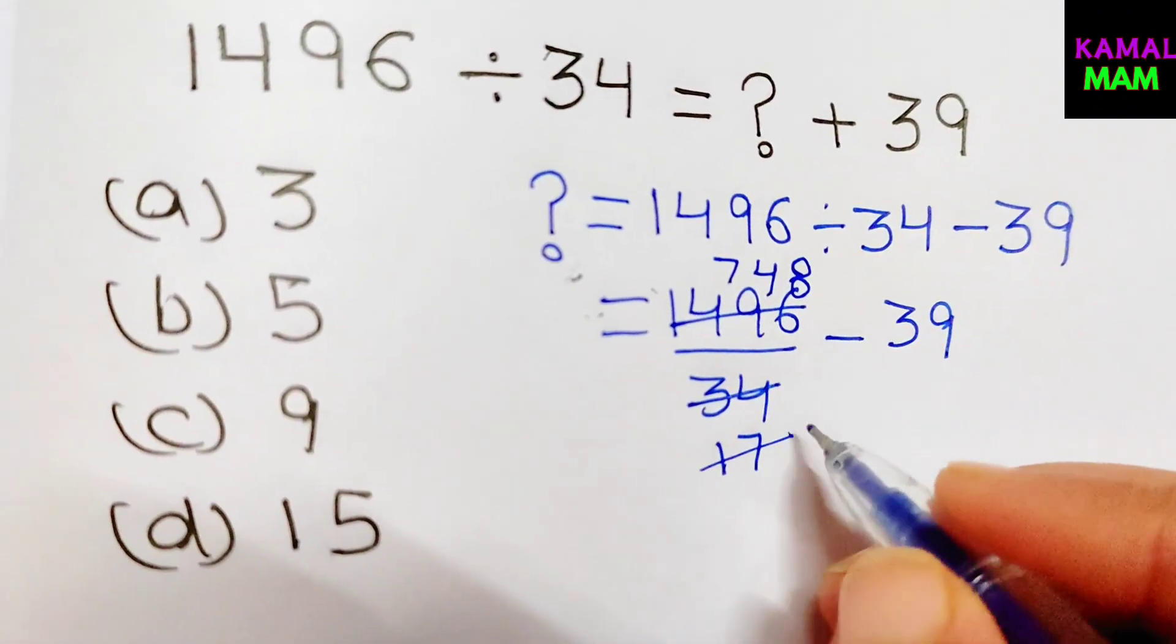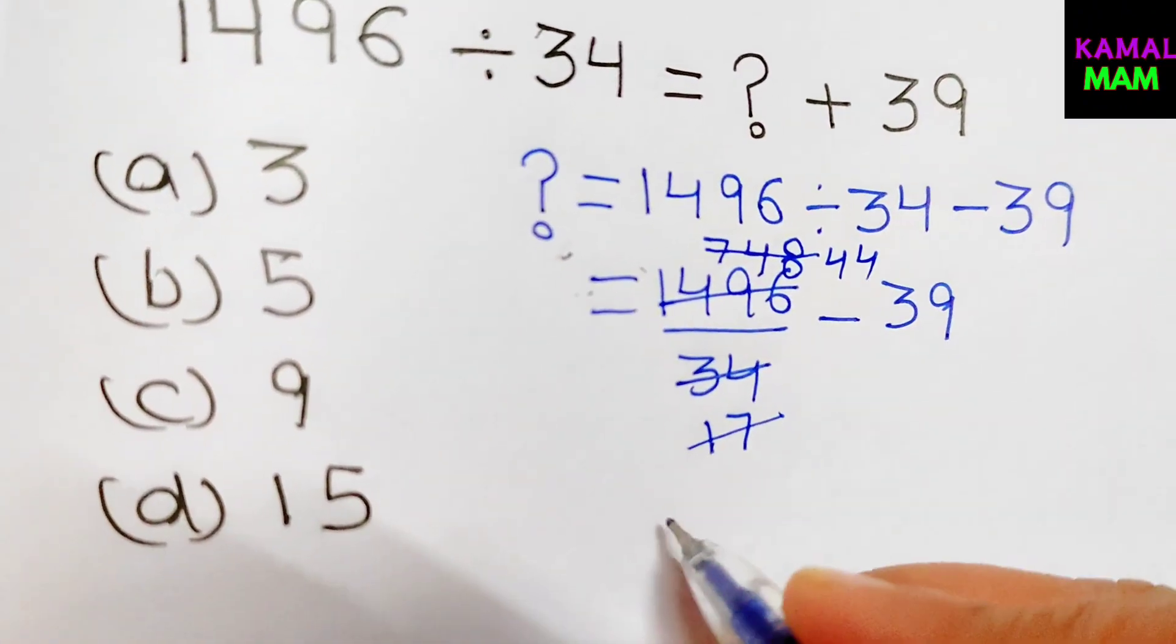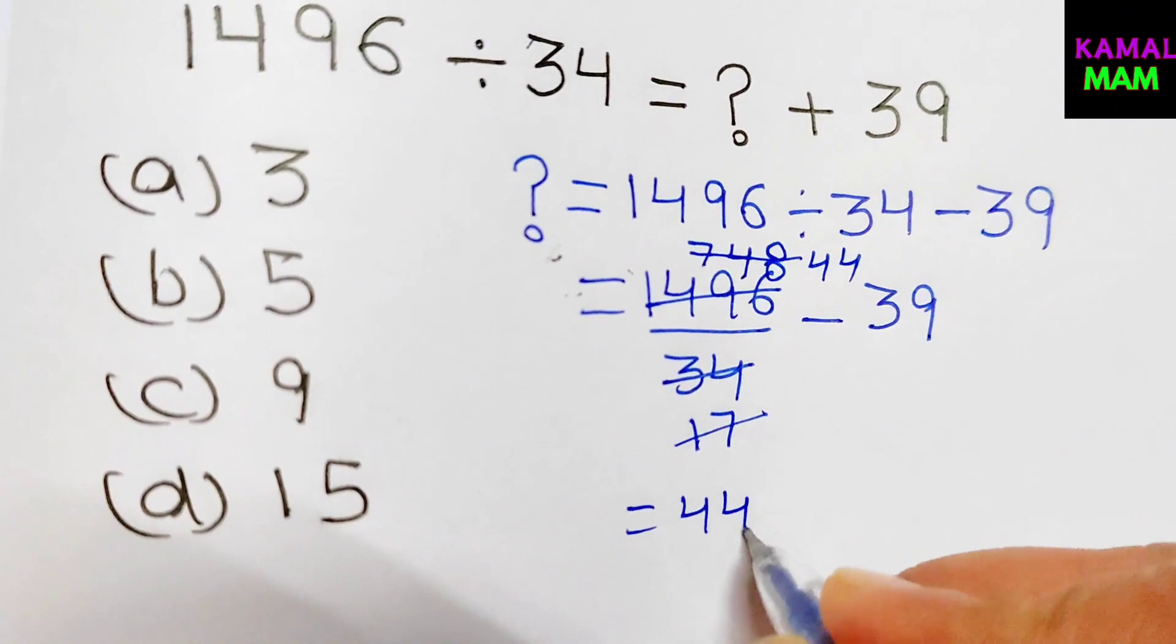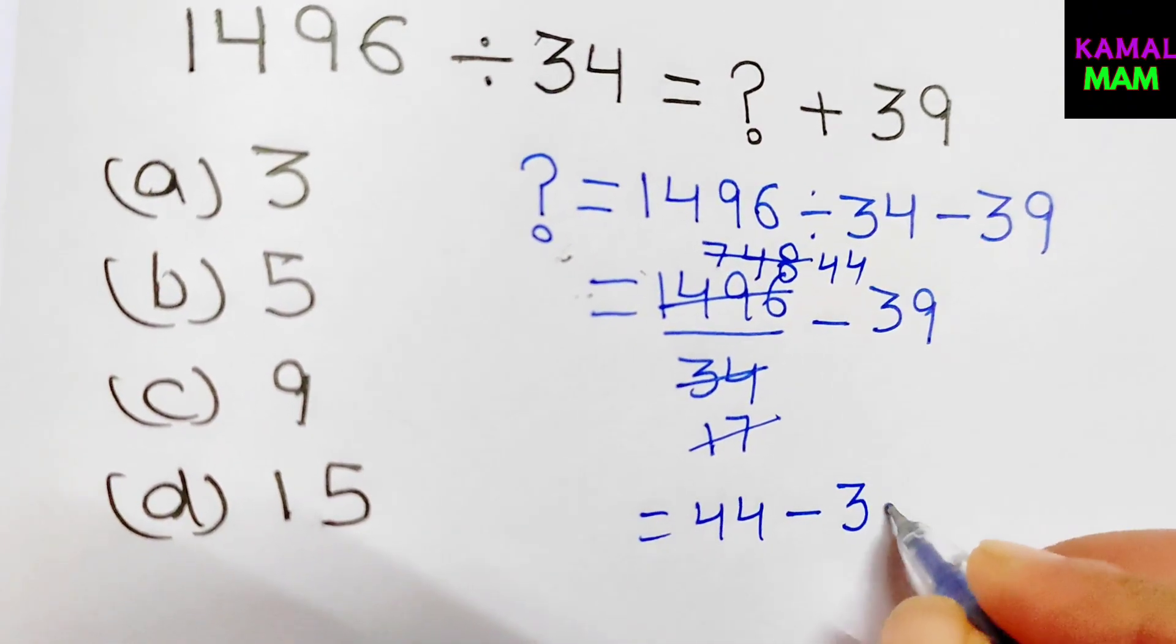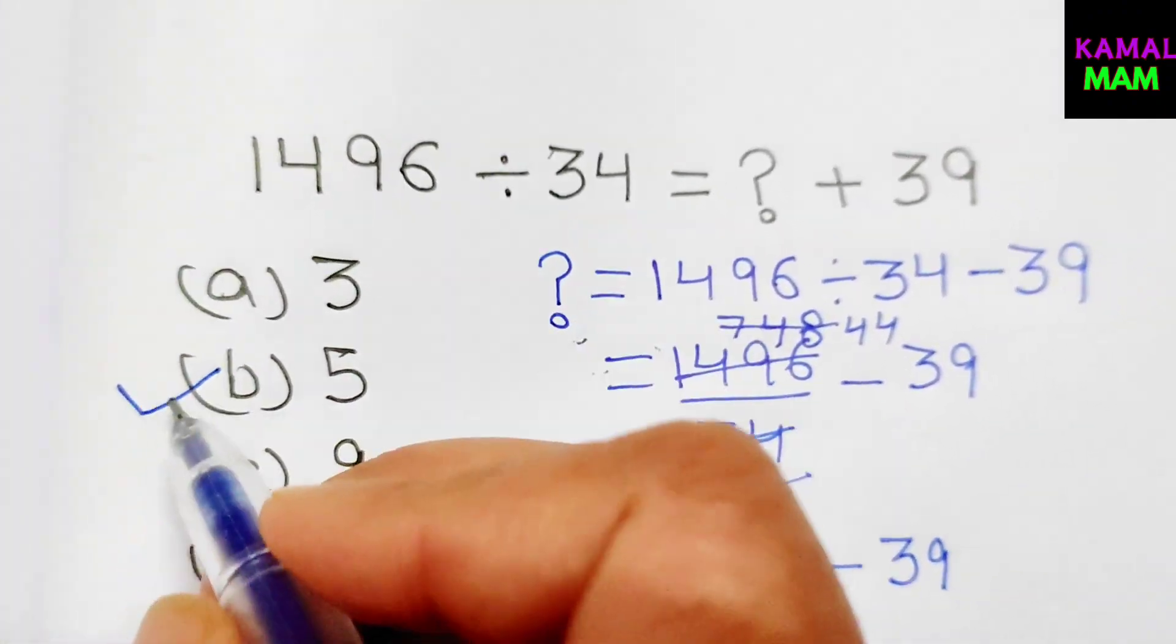So here it's 17 goes on the table of here, it's 44. So here 44 minus 39 equals 5 is our final answer. Thank you.